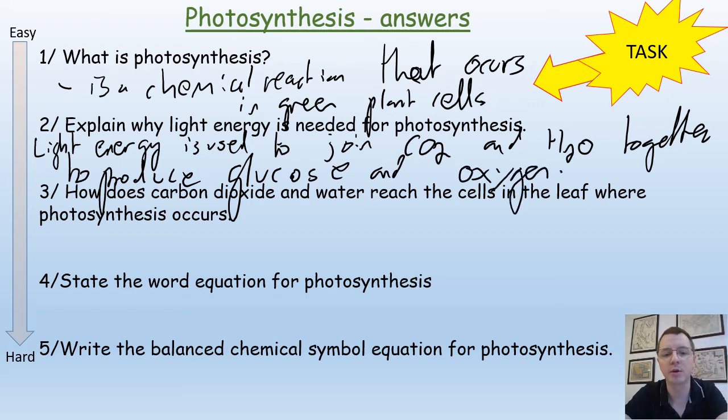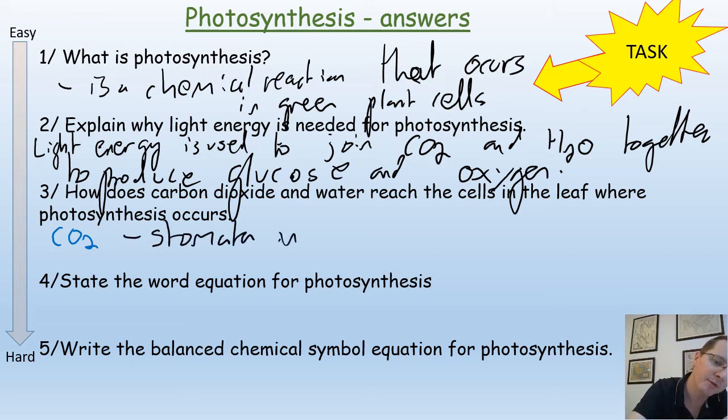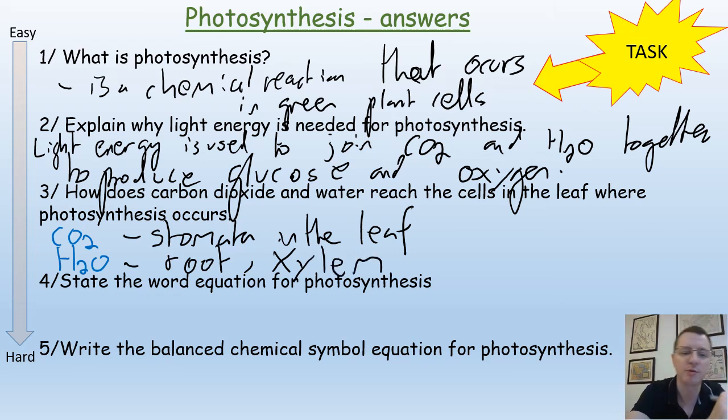How does carbon dioxide and water reach the cells where the photosynthesis occurs? Well, carbon dioxide enters through stomata in the leaf, and the water enters through the root and travels up through the stem of the plant through the tissue known as the xylem tissue.